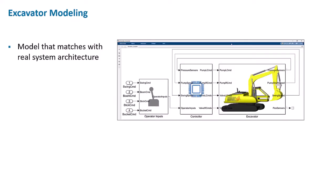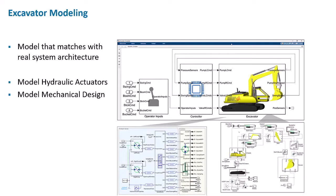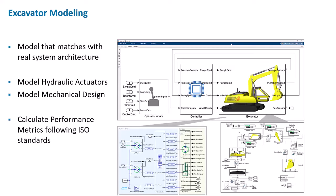We don't only have a physical model — we can also extend it with a controller and operator inputs, creating a simulation model that really matches a real system architecture. The physical model contains the mechanical parts from CAD and also incorporates hydraulic actuators: the pumps and valves used to actuate the cylinders. It can be used to calculate performance metrics following ISO standards, which is what's done in our reference example.